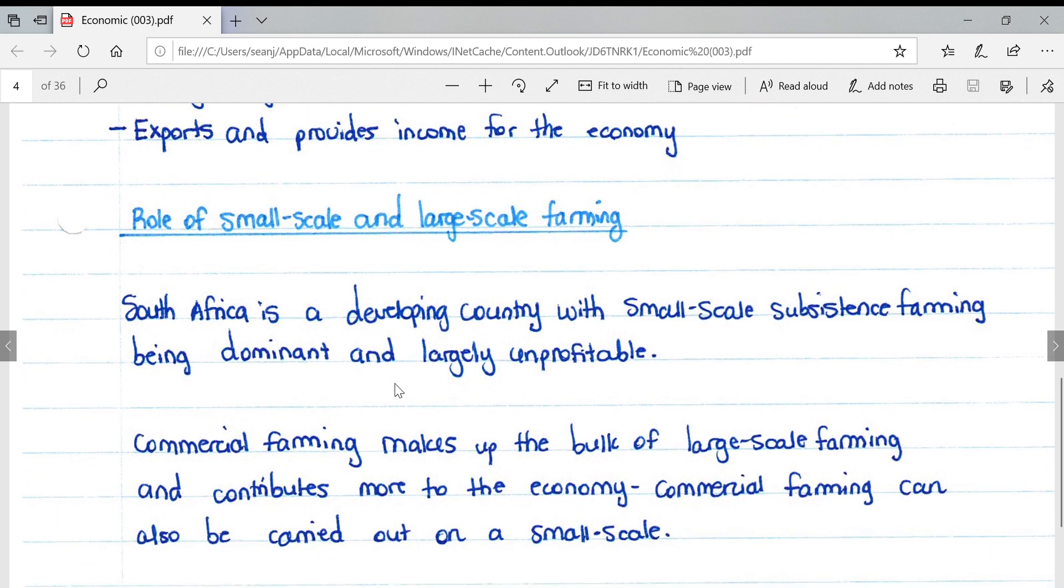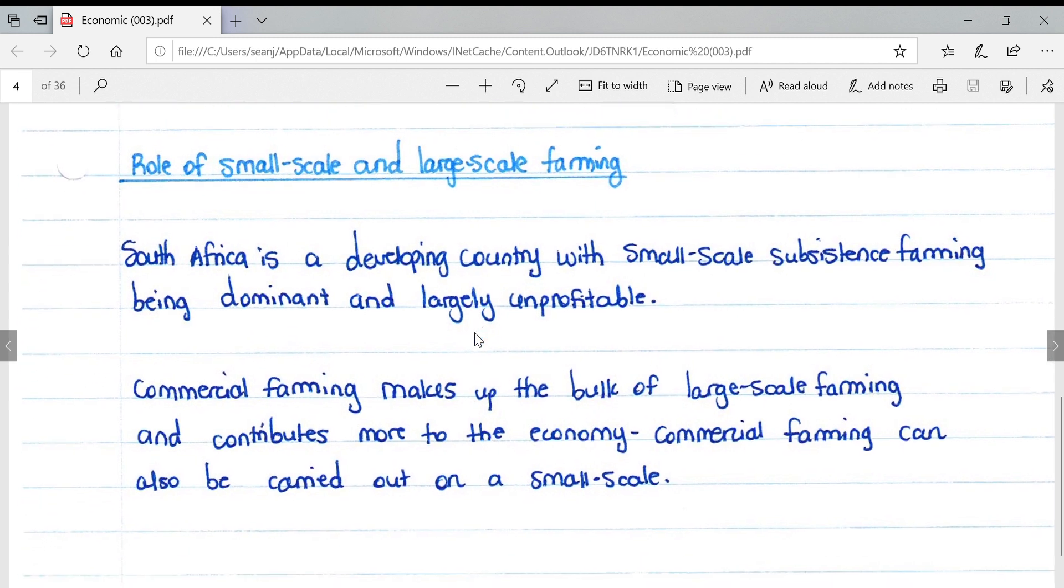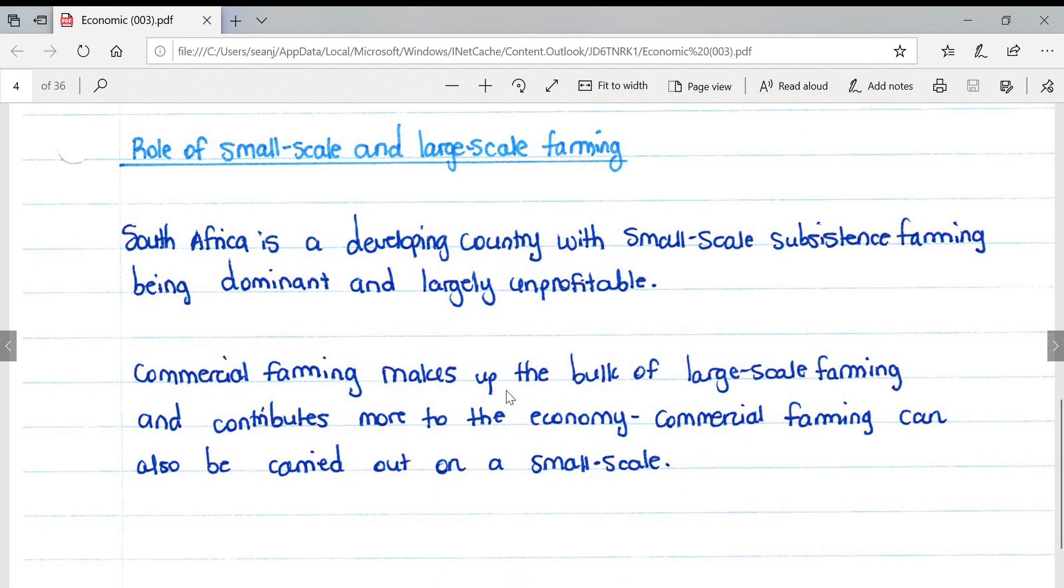Looking at the role of small-scale and large-scale farming, South Africa is a developing country with small-scale subsistence farming being dominant and largely unprofitable. Commercial farming makes up the bulk of large-scale farming and contributes more to the economy. Commercial farming can also be carried out on a small scale - that's an important point to note.